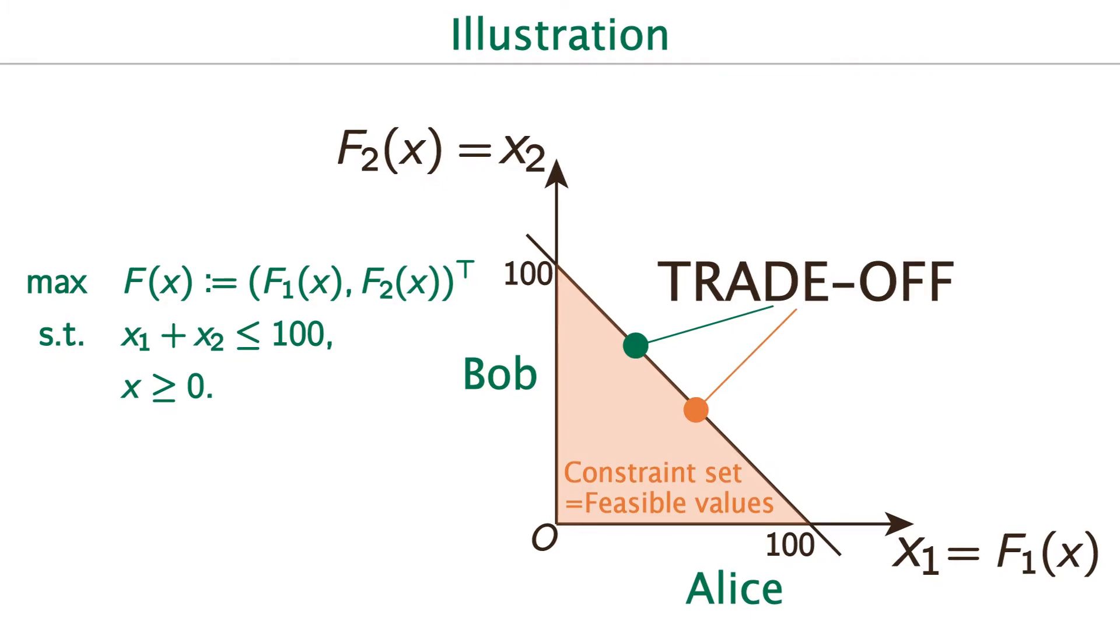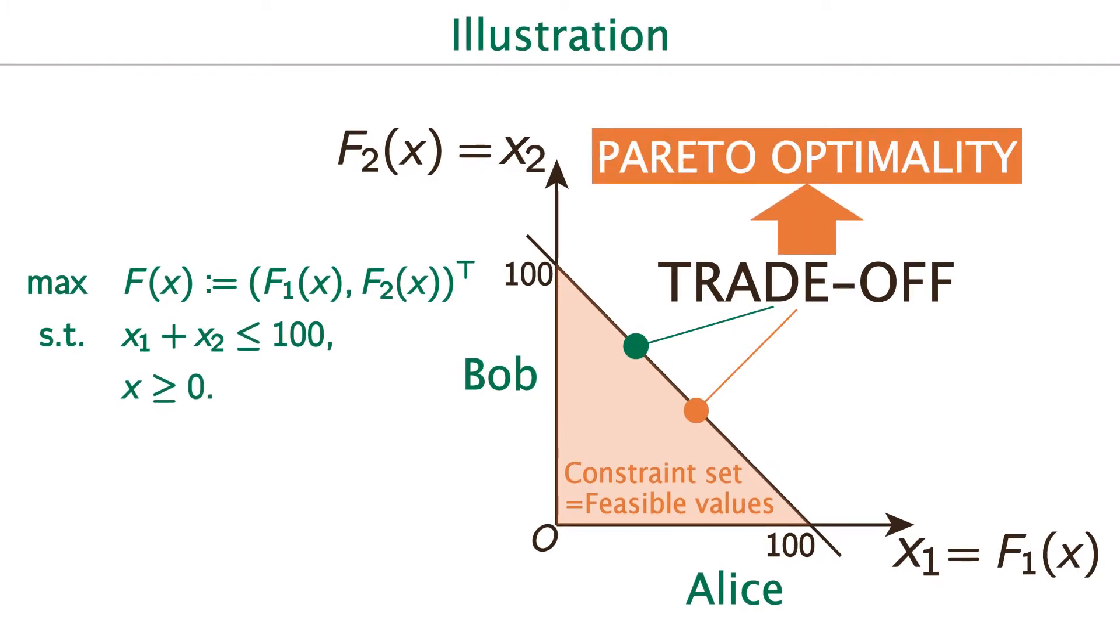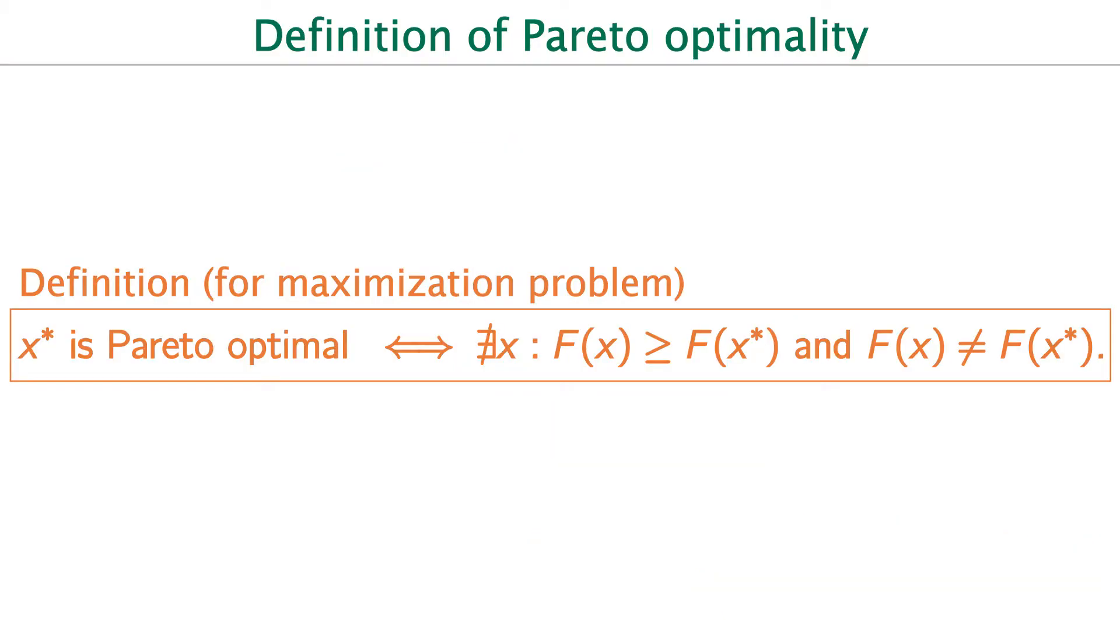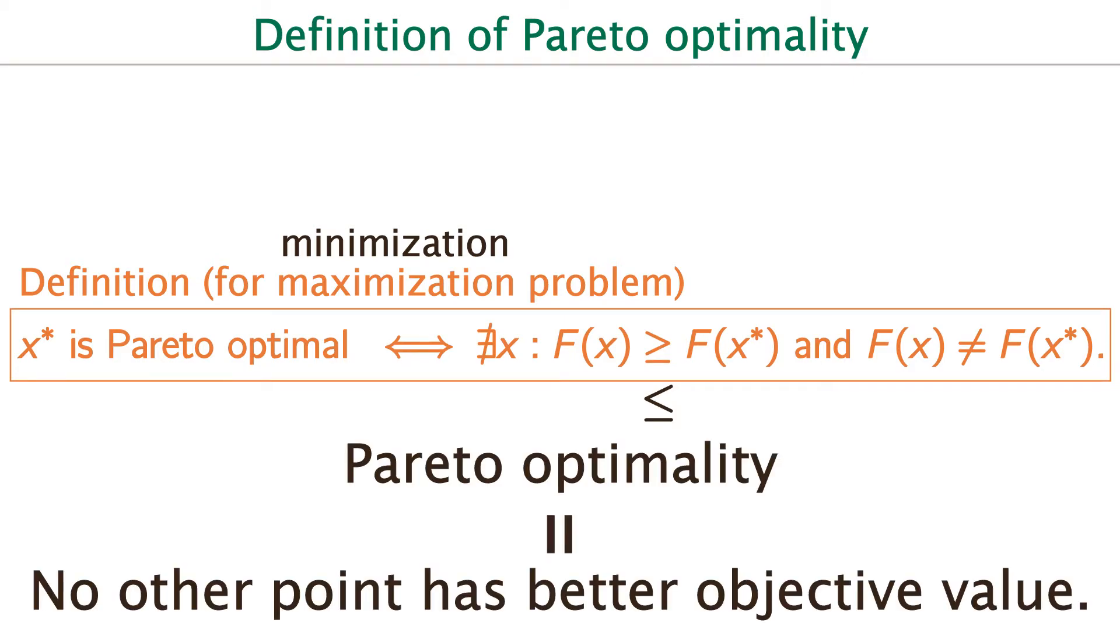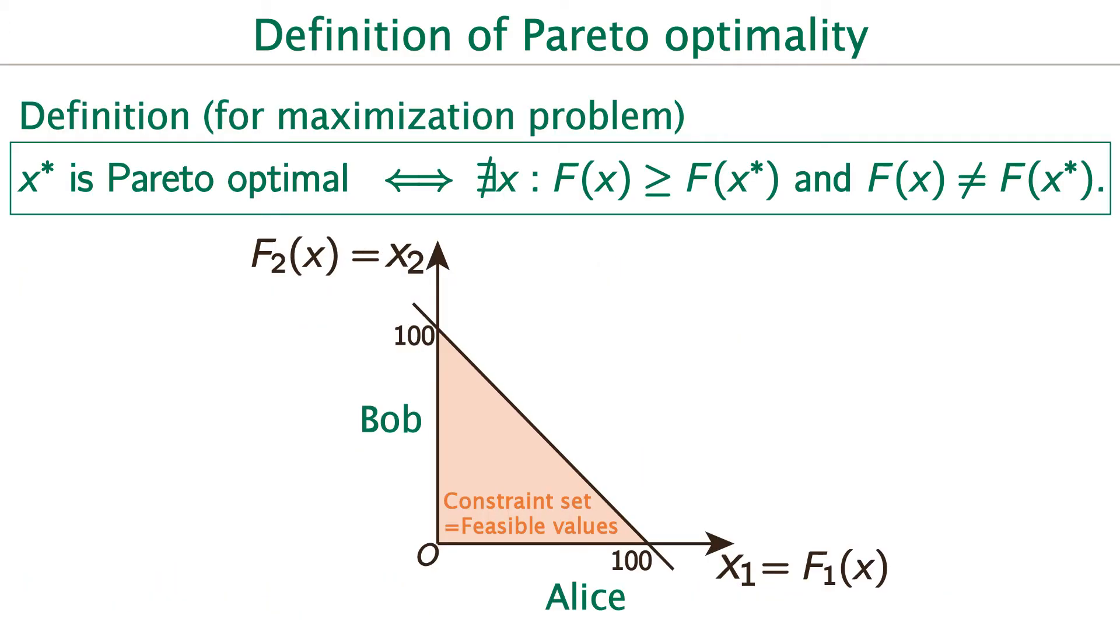In fact, Pareto optimality is the concept that represents a trade-off relationship. Now, I show you the definition of Pareto optimality. Pareto optimality is defined as this. Note that this definition is for the maximization problem, so for minimization problem, reverse the inequality. As you see, Pareto optimality means that there doesn't exist any other point that has better objective value.